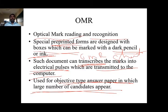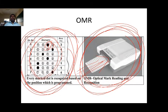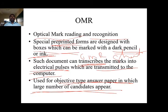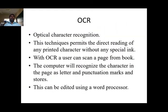So what is an OMR sheet? A special pre-printed form designed with boxes which can be marked with dark pencil or ink. And what is the work of the OMR machine? Such a document can transcript the marks into electrical pulse which are transmitted into the computer. This is called OMR, used for objective type answer papers where the number of candidates is large.